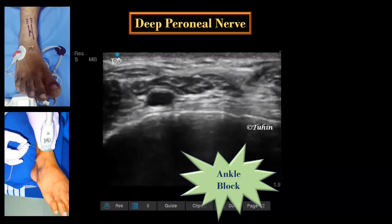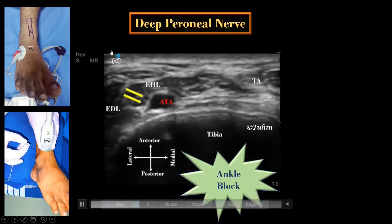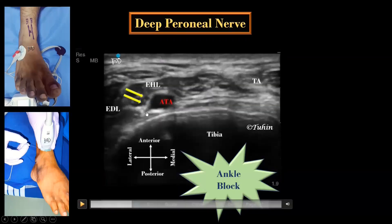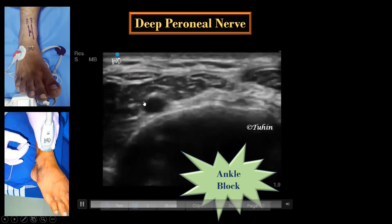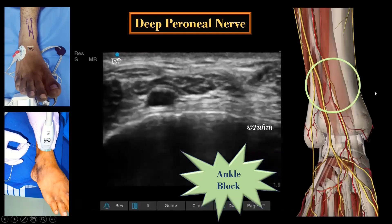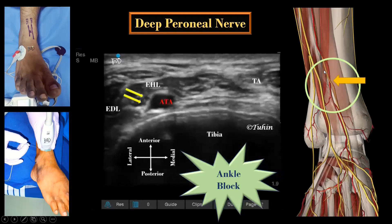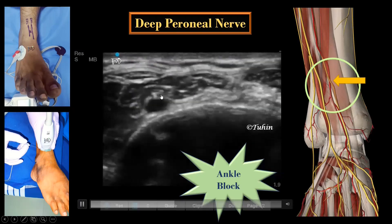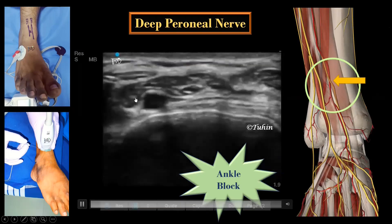For deep peroneal nerve block, the transducer is placed in the intermalleolar region in transverse orientation on the anterior aspect of the ankle. It is seen as two small hypoechoic dots with a hyperechoic rim, lateral and superficial to the anterior TBL artery. On proximal and distal scanning, the nerve will be seen climbing up and down the anterior TBL artery. Anatomically, the nerve crosses the artery from lateral to medial side.